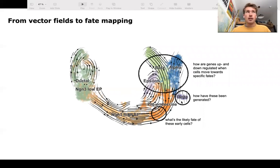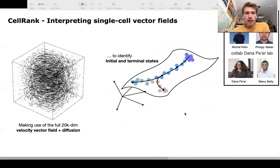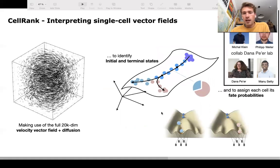but it is better to study these trends directly in high dimensions because not enough of the biological variance is actually retained in such a low-dimensional space. So this is the idea of CellRank: interpreting single-cell vector fields directly in high dimensions to identify initial and terminal states and to assign each cell its fate probability.